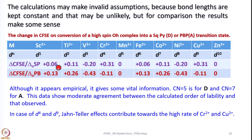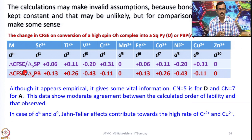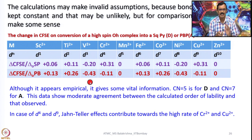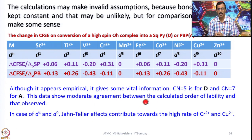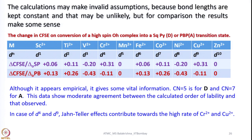You can see the CFSE difference for square pyramidal going from octahedral — this is for the dissociative pathway — and when you change coordination number from 6 to 7 in the associative pathway assuming pentagonal bipyramidal, these are the CFSE values from d1 to d10. Although it appears empirical, it gives vital information: CN=5 corresponds to dissociative and CN=7 to associative. This data shows moderate agreement between calculated order of lability and that observed, with d4 and d9 showing high rates due to net Jahn-Teller contributions. Crystal field splitting and ligand field geometry have some influence on substitution reactions.